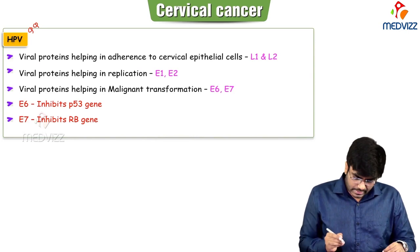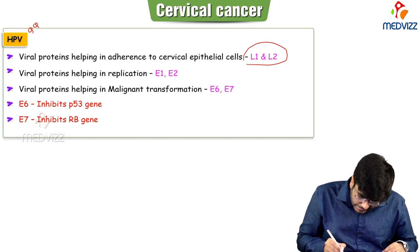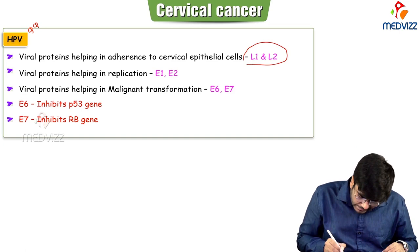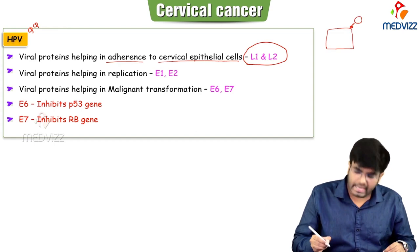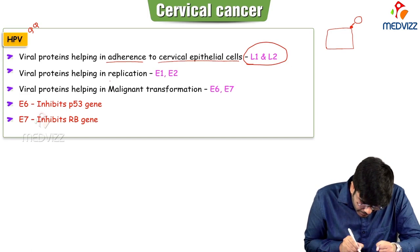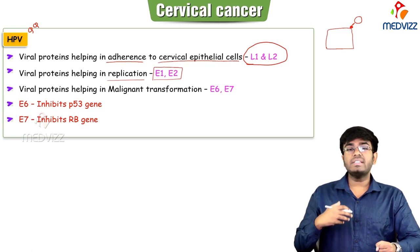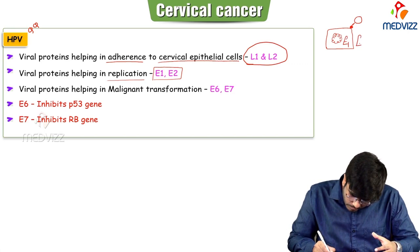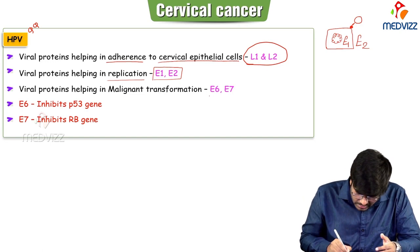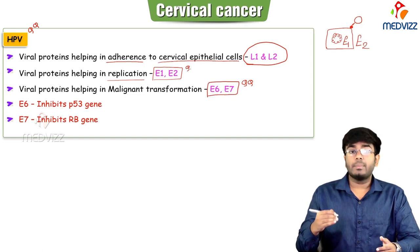HPV has certain proteins like L1 and L2 which help in adherence to the cervical epithelial cell. E1 and E2 are viral proteins which help in the replication of the virus inside the cervical epithelial cells. E6 and E7 are the viral proteins which help in malignant transformation. E6 protein inhibits the p53 gene in the epithelial cells — p53 is the guardian angel of the cell that prevents a normal cell from converting into a cancer cell.